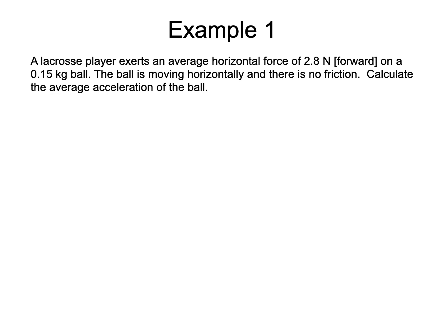Our first example involves a horizontal applied force exerted on a ball. The mass of the ball is given, the motion is horizontal, and friction is neglected. We start with a free body diagram. Here is the ground and the ball of mass m. A horizontal applied force is exerted on the ball. This motion is happening at the surface of the Earth, so a gravitational force is present. The ball is touching the ground, so a normal force is present, perpendicular to the ground. And since friction is neglected, we do not need to worry about the friction part of the contact force.